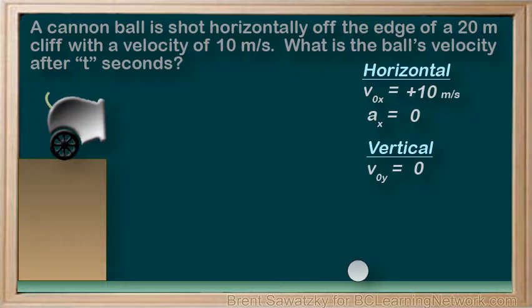So whether dropped or shot, we know that we have the force of gravity pulling this cannonball towards the Earth, causing an acceleration, Ay, of minus 9.8 meters per second squared. So in the vertical direction, the cannonball starts at a velocity equal zero and gets faster and faster. Thus, we need an equation to solve for the vertical velocity at any particular time, t.